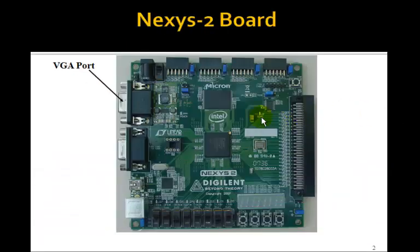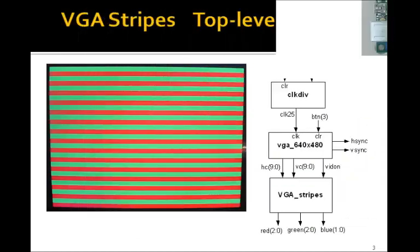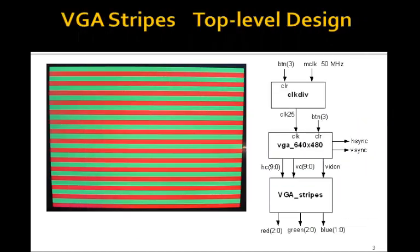Now the VGA port is this connector on the Nexus 2 board. You would connect this to the VGA monitor. And this is what we want to produce, a series of green and red stripes on the screen. And this will be the top-level design.